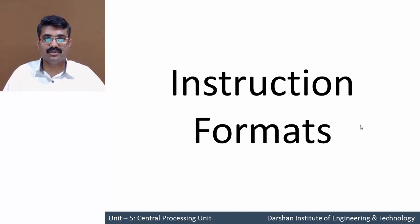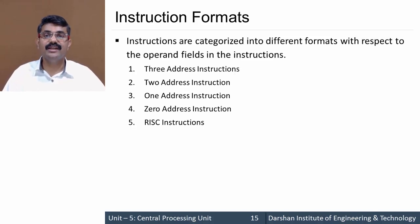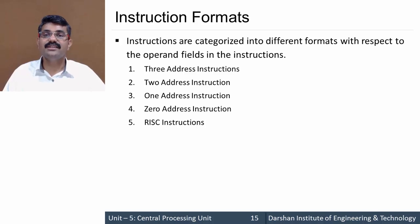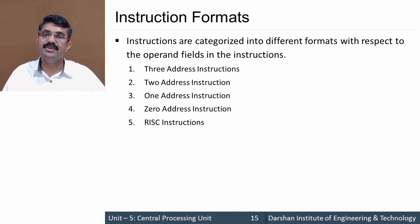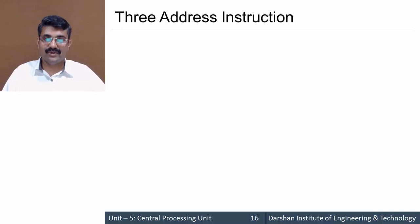In this session we'll discuss instruction format. Instructions are categorized based on the number of operands provided to the instruction. If we provide three operands it is a three address instruction; similarly it can be two address, one address, zero address, or RISC type instruction. RISC type instructions are hybrid instructions — a combination of two address, three address, and one address. The type of instruction format is decided based on the operands. Let us discuss one by one, starting with three address instruction.